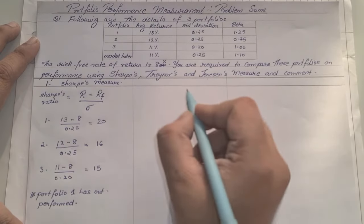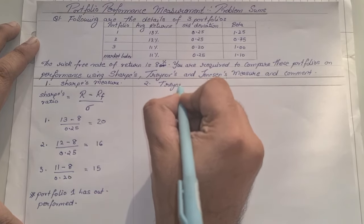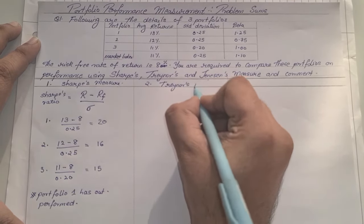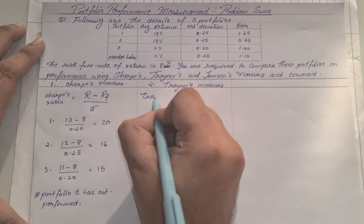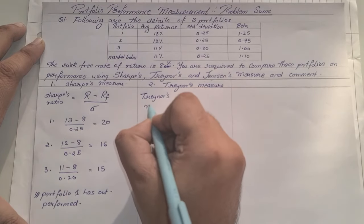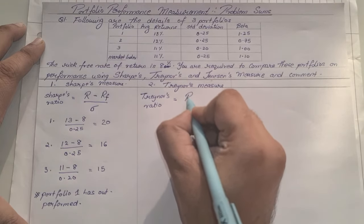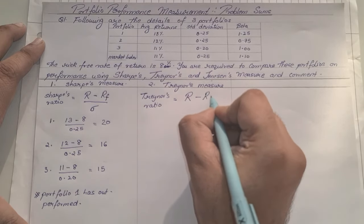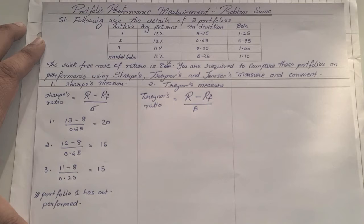Now the second method is known as Treynor's measure. Under Treynor's ratio the formula is similar to Sharpe's with just one change: it is average return R minus risk-free return RF, upon beta. So in Sharpe's measure it is standard deviation, whereas under Treynor's it is beta. Let us now apply these values for each of the portfolios.